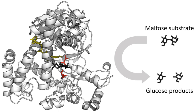The first number broadly classifies the enzyme based on its mechanism. The top-level classification is: EC1, oxidoreductases, catalyze oxidation-reduction reactions; EC2, transferases, transfer a functional group such as a methyl or phosphate group; EC3, hydrolases, catalyze the hydrolysis of various bonds; EC4, lyases, cleave various bonds by means other than hydrolysis and oxidation; EC5, isomerases, catalyze isomerization changes within a single molecule; EC6, ligases, join two molecules with covalent bonds. These sections are subdivided by other features such as the substrate, products, and chemical mechanism. An enzyme is fully specified by four numerical designations.